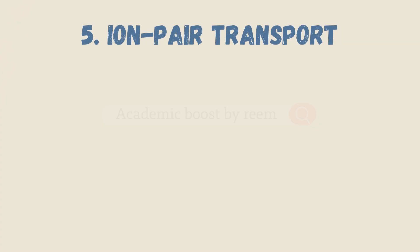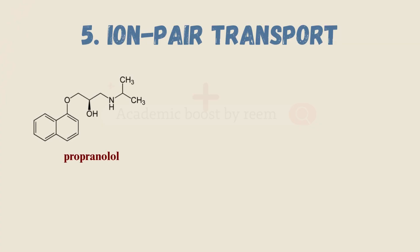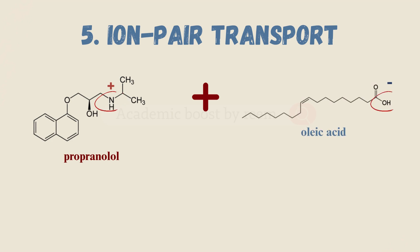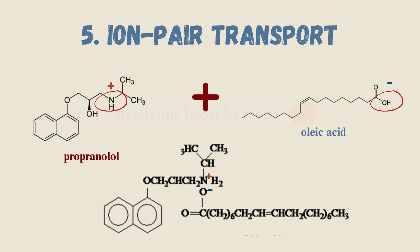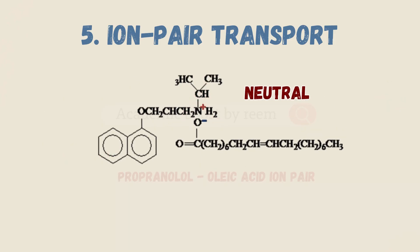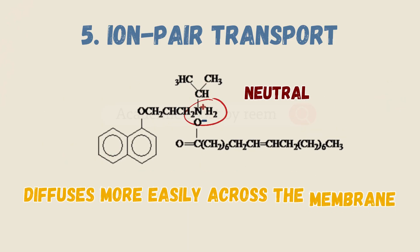Last but not least, number five: ion-pair transport, where an ionized drug like propranolol is linked with an oppositely charged ion like oleic acid, forming an ion pair in which the overall charge is neutral. This neutral drug complex diffuses more easily across the membrane.